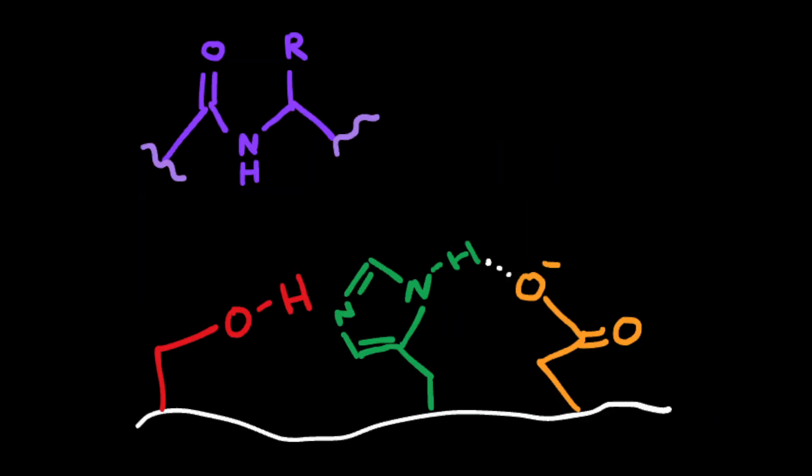Now this is a little diagram of the active site, and we're going to go through the arrow pushing and the mechanism of a serine protease. The purple is our polypeptide that we're going to be cutting, and as I said, we have those three amino acid residues.